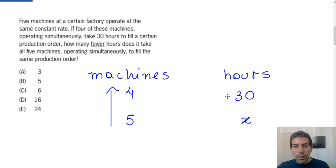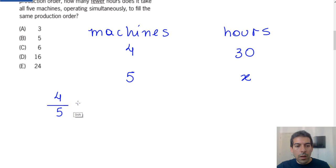Notice that if we increase the number of machines, the number of hours that those five machines do the same job has to decrease. To set up the proportion correctly, we have to consider that 4/5 must equal X/30.